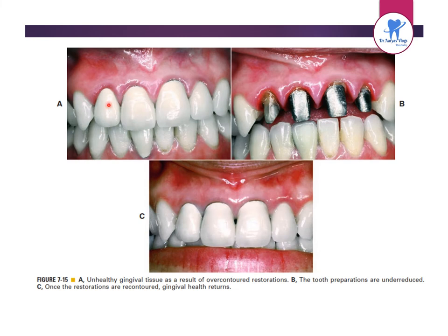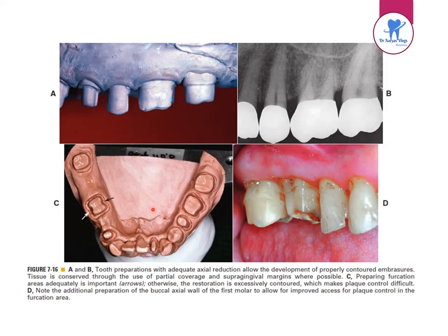This picture shows unhealthy gingival tissue as a result of an over-contoured restoration. When the under-reduced restorations are re-contoured, gingival health returns. Adequate axial reduction allows development of properly contoured embrasures. Tissue is conserved through the use of partial coverage, with partial coverage and supragingival margins both possible.